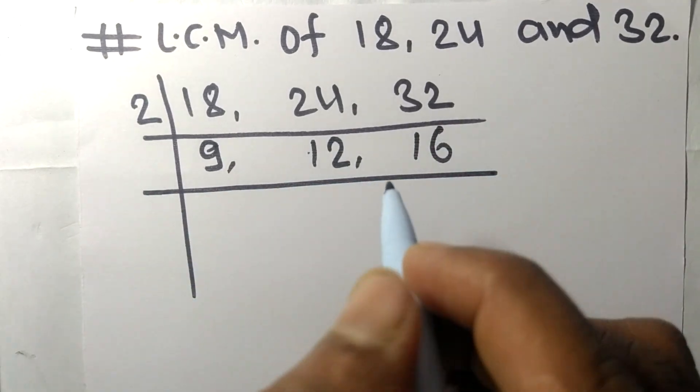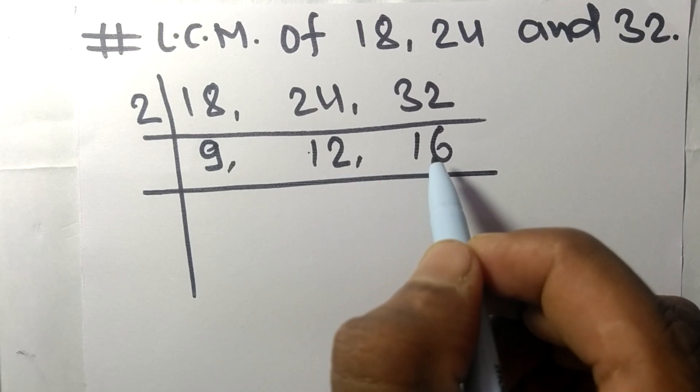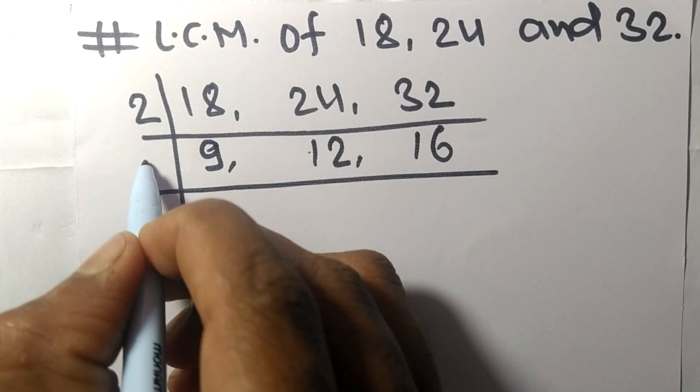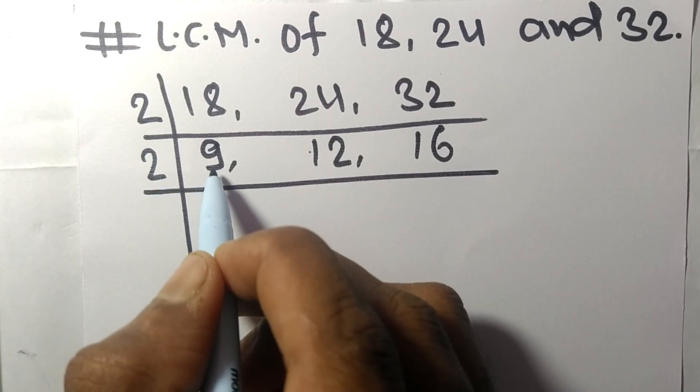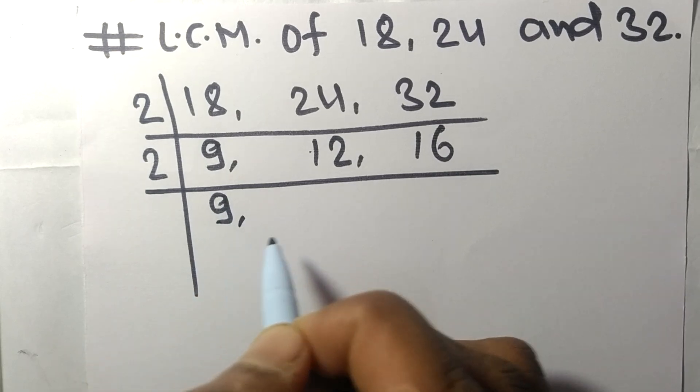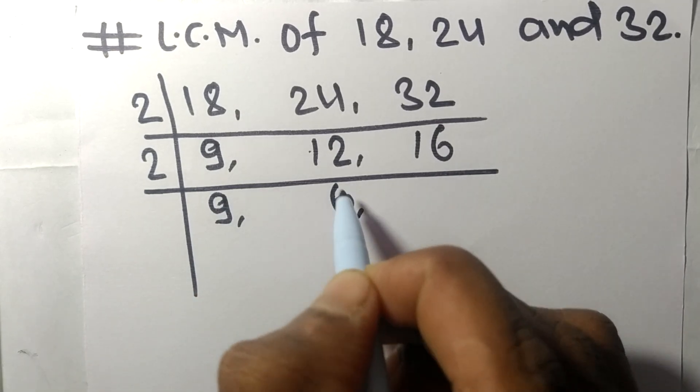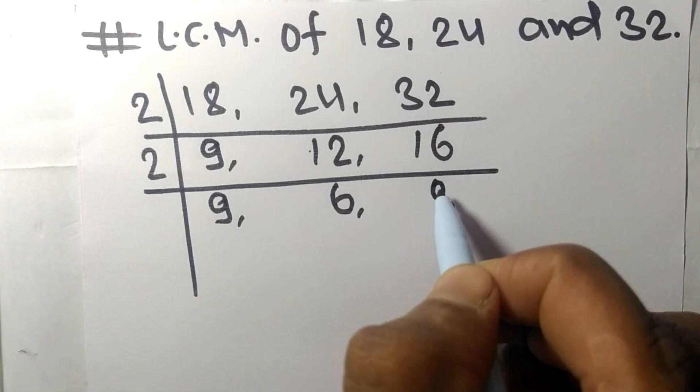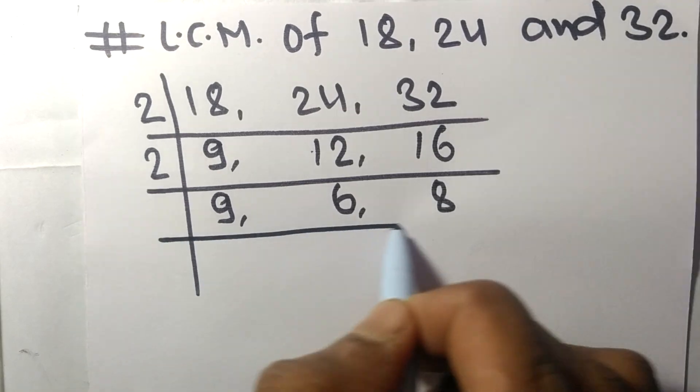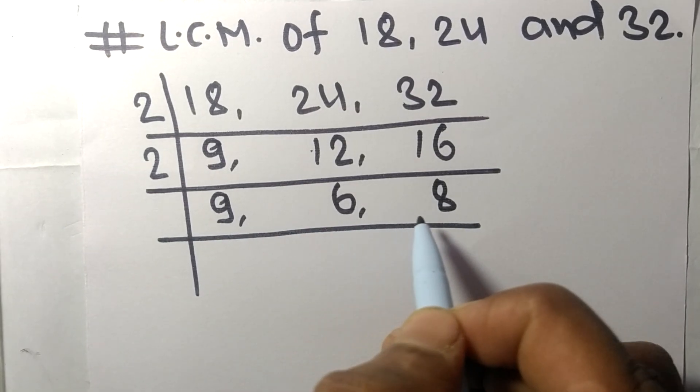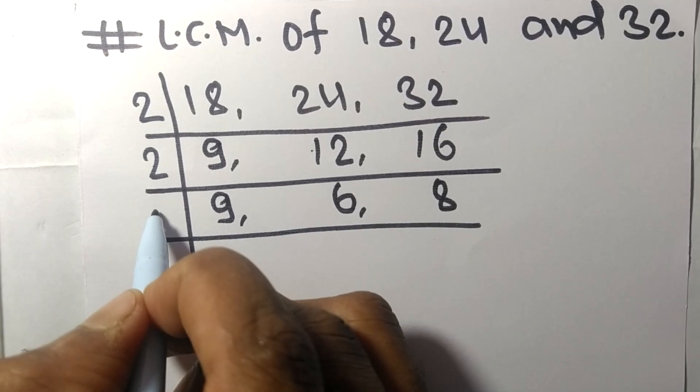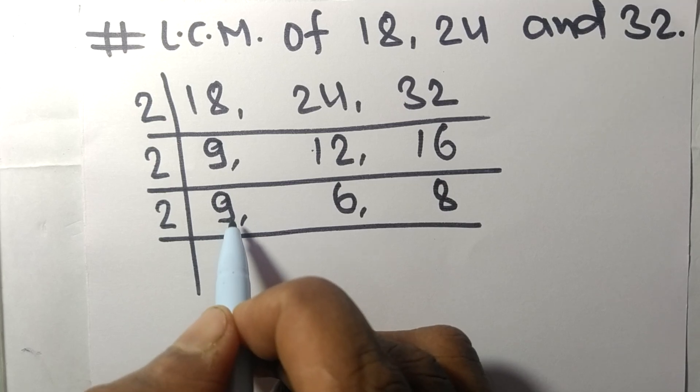Now 12 and 16 are divisible by 2, but 9 is not divisible, so it stays the same. 2 times 6 equals 12, 2 times 8 equals 16. Now the numbers 6 and 8 are divisible by 2, but 9 is not divisible, so it stays the same.